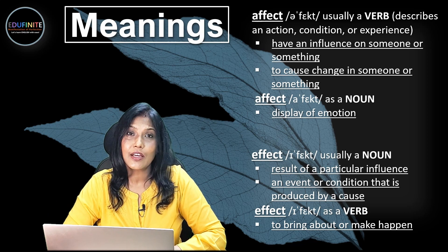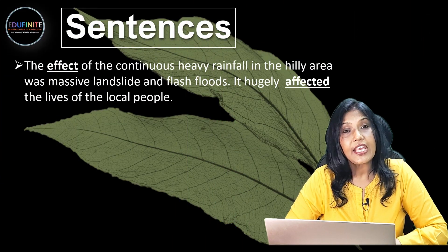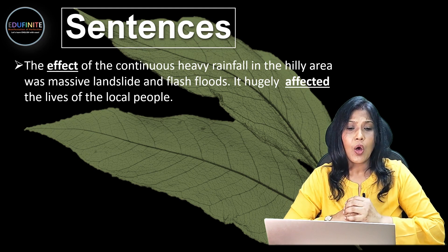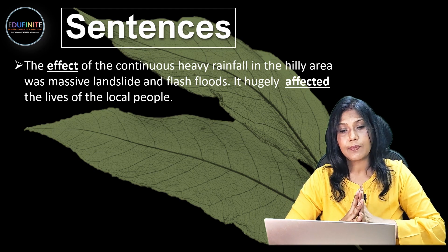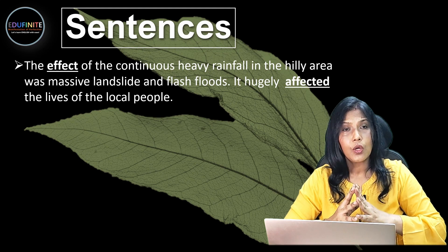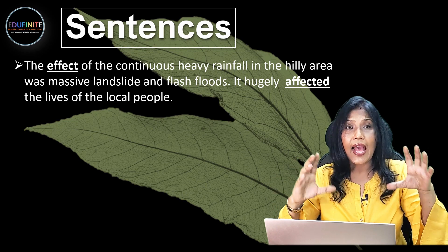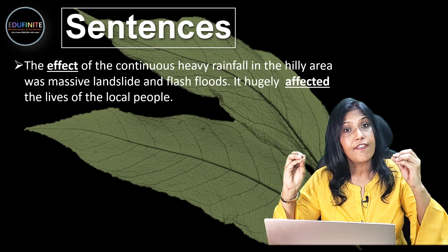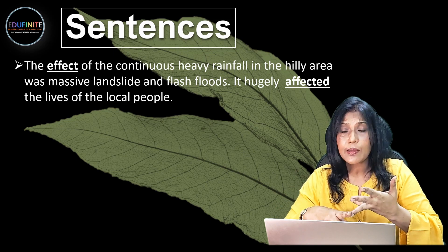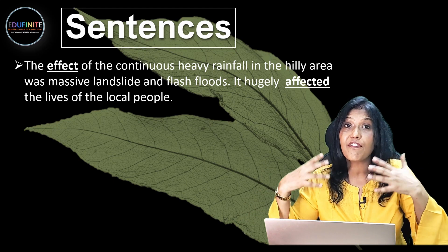Let's look at sentences to understand these meanings better. The first sentence: 'The EFFECT of the continuous heavy rainfall in the hilly area was massive landslide and flash floods.' Because of the flash floods, the lives of the local people living there was affected.